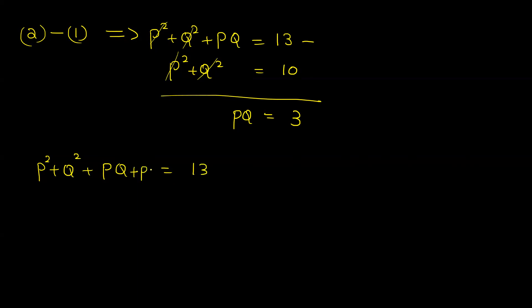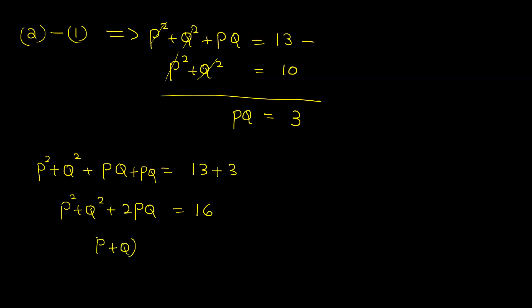Now, adding PQ to both sides of equation one: P squared plus Q squared plus 2PQ equals 10 plus 2 times 3, which equals 16. That means P plus Q all squared equals 16, so P plus Q equals 4.